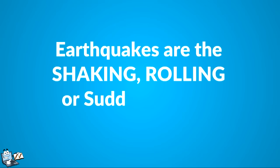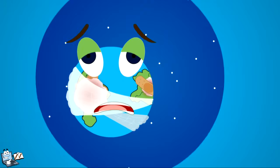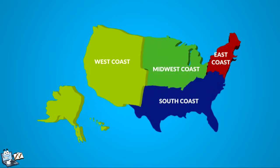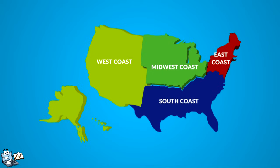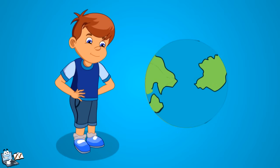Earthquakes are the shaking, rolling, or sudden shock on the Earth's surface. More than a million earthquakes harm the world each and every year. The West Coast is most earthquake-prone, but earthquakes can happen in the Midwest and also along the East Coast. Look closely and see how it happens.